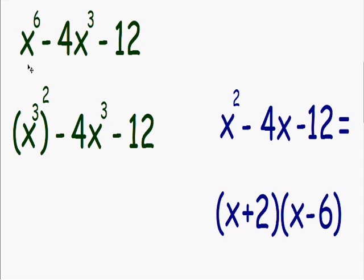The reason why I manipulated this x to the sixth term is because I want to make this green trinomial look exactly like the blue trinomial. Notice in the blue trinomial, we have an x squared. And in the green trinomial, we have an x cubed squared.